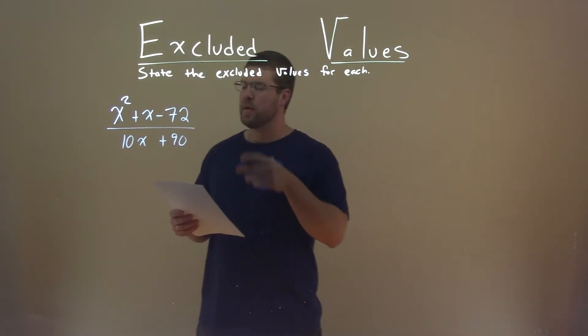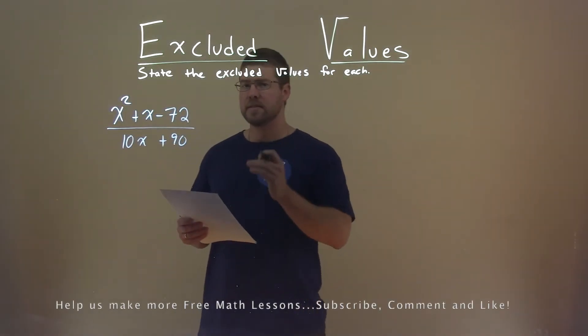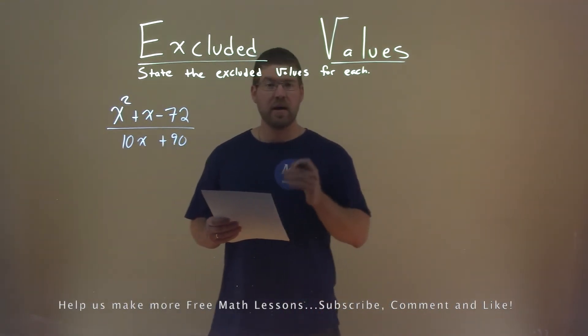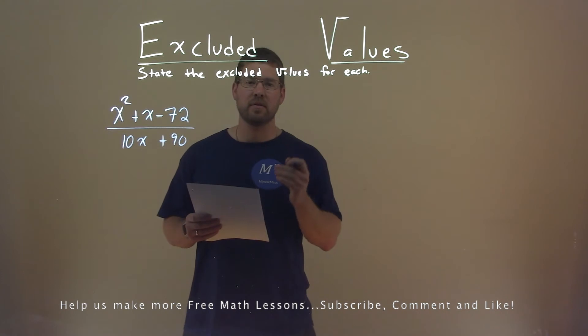We're given this problem right here, x squared plus x minus 72 over 10x plus 90, and we need to state the excluded values.